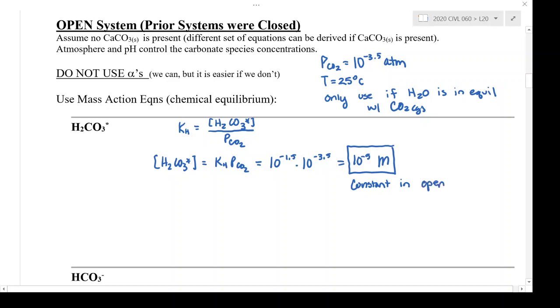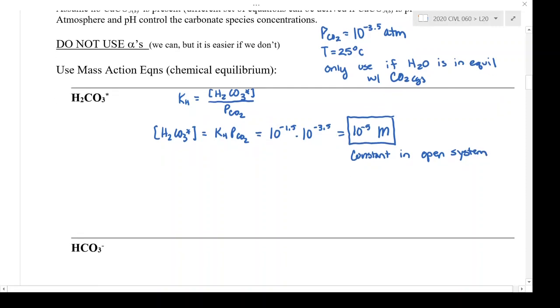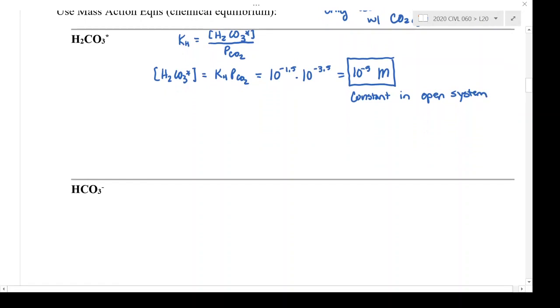So this is constant in an open system, and next I'm going to go on to the next derivation, which is for bicarbonate. Here I'm going to use the first weak acid reaction. I'll write out the equilibrium expression: Ka1 equals H plus times bicarbonate HCO3 minus over H2CO3 star.